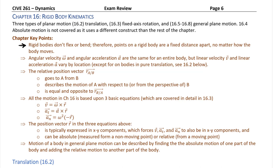Angular velocity is going to be constant for a body at an instant. A single body is going to have one angular velocity and one single angular acceleration. So angular acceleration and velocity do not vary by location — they vary with the body. Now if you have multiple bodies in a system, then each one will likely have its own angular velocity and angular acceleration.